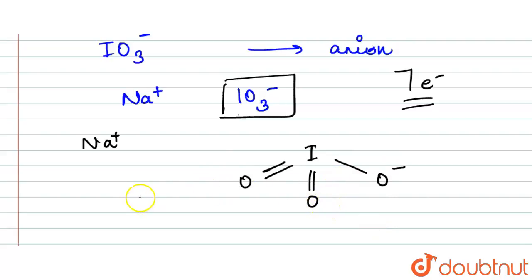This is the structure for IO3 minus. If we draw its Lewis representation, here it will have one lone pair because here we have five electrons have been shared.